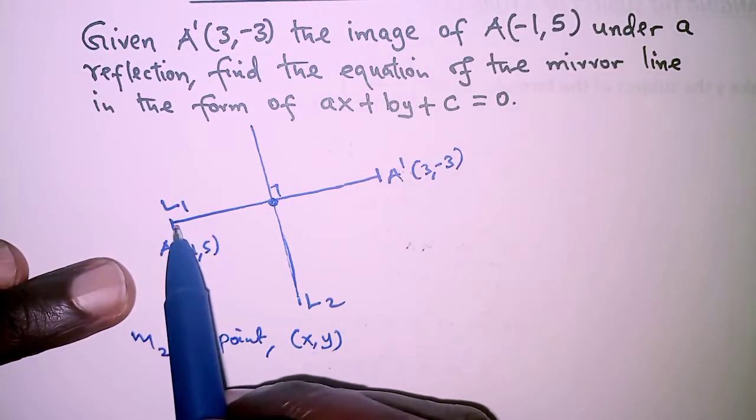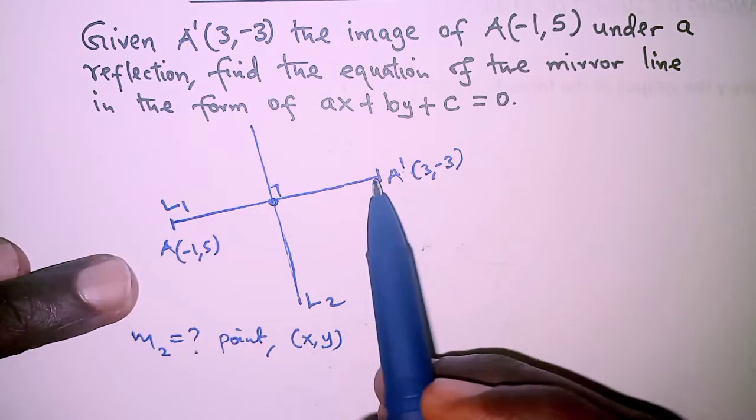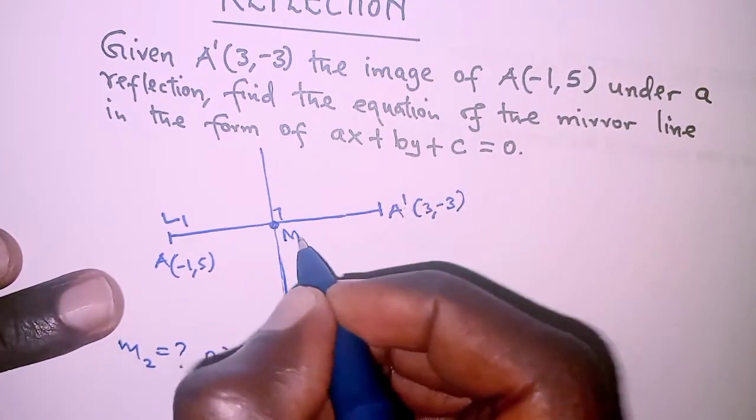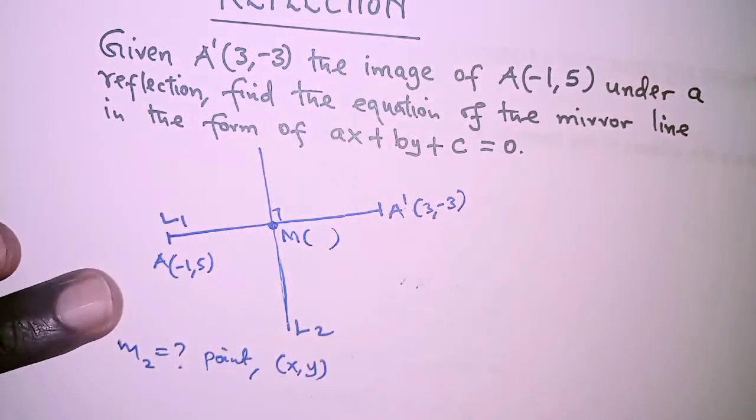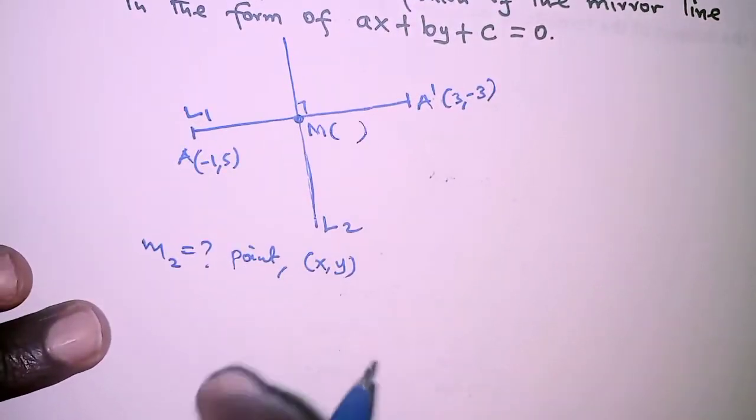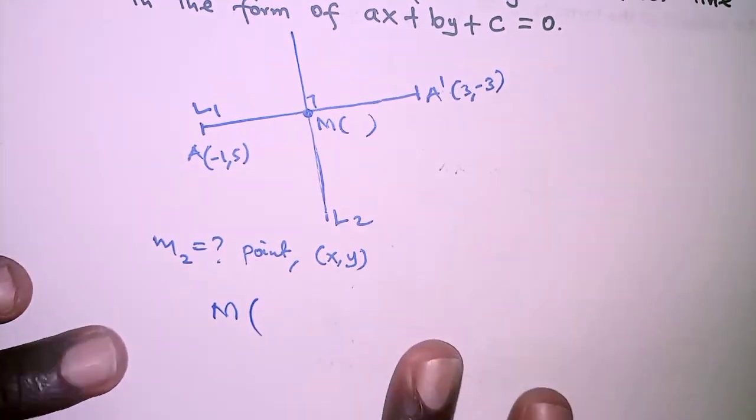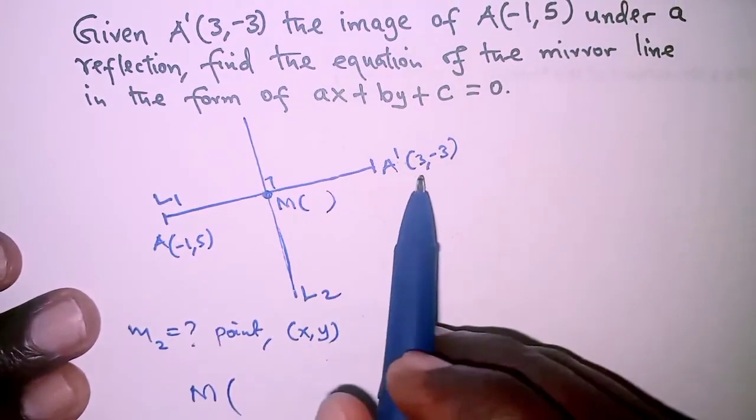At this particular point we know that it is the midpoint of the line segment AA prime, and therefore if we call it M, then we'll have to determine its coordinates as follows.